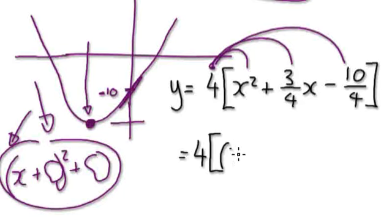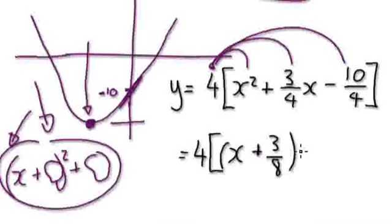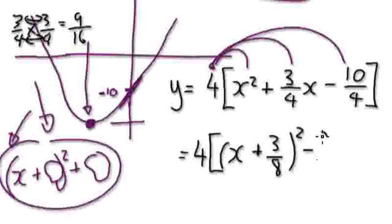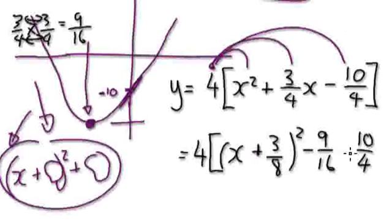So it would be 4 square bracket x — I'm going to need half of this coefficient here, so it would be 3 over 8 — so x plus 3 over 8, squared. Then I'm going to get some extra terms. The extra term comes from 3 over 4 times 3 over 4 — top times top is 9, bottom times bottom is 16. So I'm going to immediately minus that, 9 over 16, and then minus 10 over 4.